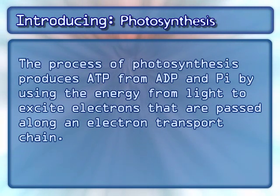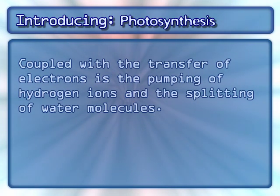The process of photosynthesis produces ATP from ADP and Pi by using the energy from light to excite electrons that are passed along an electron transport chain. Coupled with the transfer of electrons is the pumping of hydrogen ions and the splitting of water molecules.